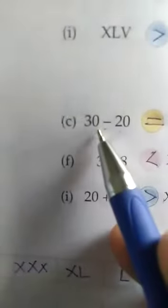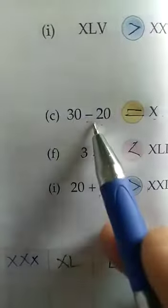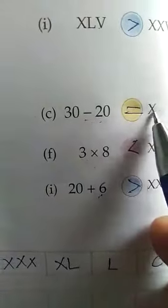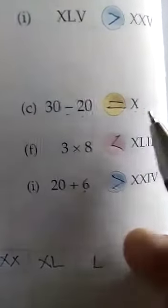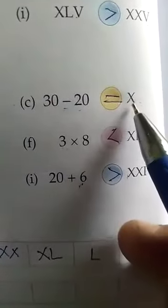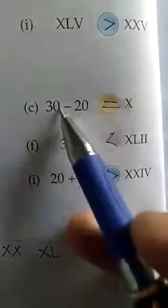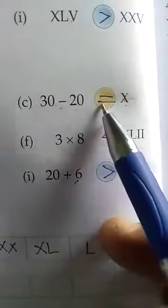Now we will do question number C. 30 minus 20 is equal to 10, and on the other side you can see X. So both are equal, so the equal sign will come here.